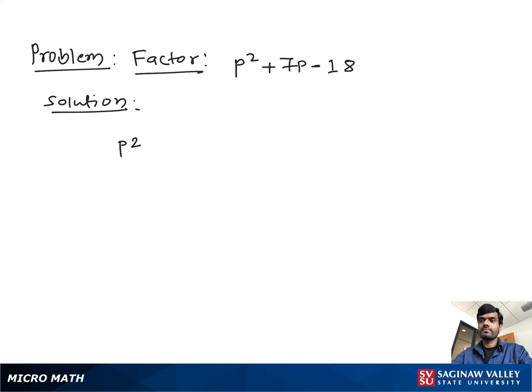Factor P squared plus 7P minus 18. First, we multiply the coefficient of P squared, which is 1, with the constant 18. We get negative 18, and from pairs of numbers we take one pair which we multiply to give us negative 18.